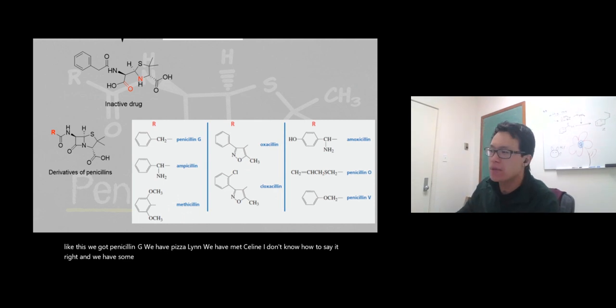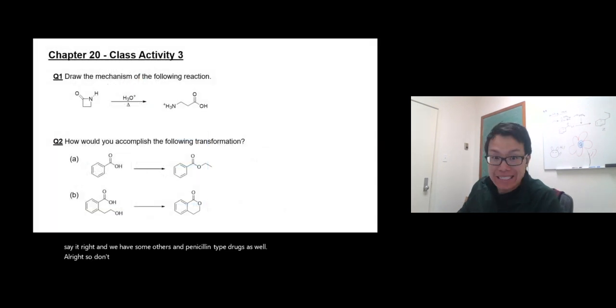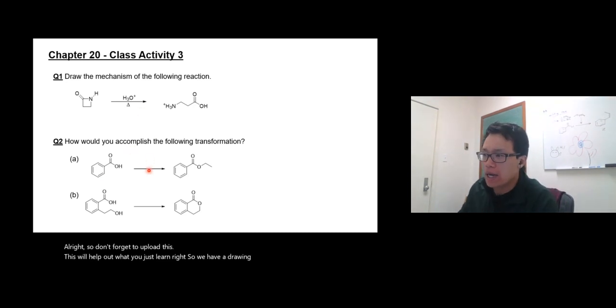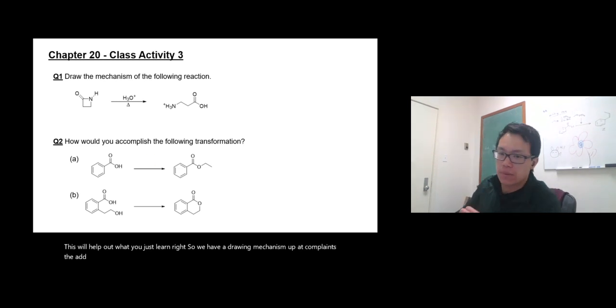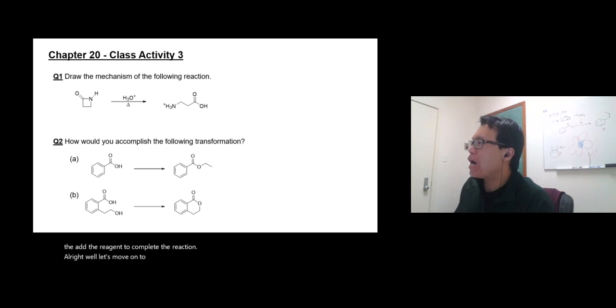Don't forget to upload this - it'll help out what you just learned. We have a drawing mechanism activity: complete the reaction, add the reagent to complete the reaction. Let's move on to the last carboxylic acid derivative: nitrile.